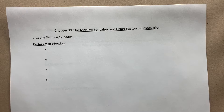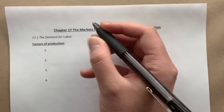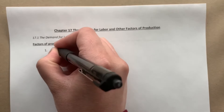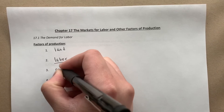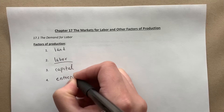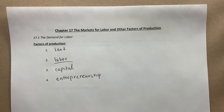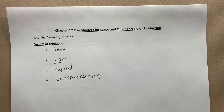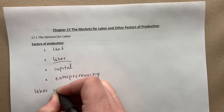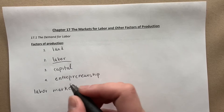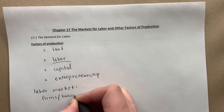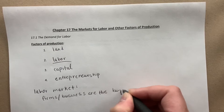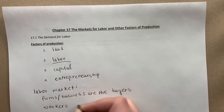Labor itself is one of our four factors of production that we've talked about in the past — land, labor, capital, and entrepreneurship. Labor markets are important to understand because labor income is the most important source of income for most of us, and labor itself is the most important input for most firms. In the labor market, firms and businesses are the buyers while workers are the sellers.